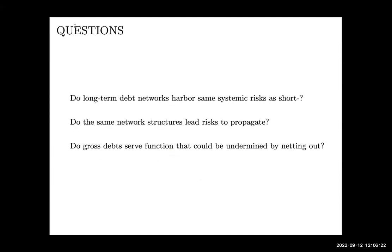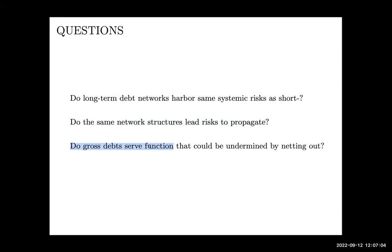We try to address several questions: Do long-term debt networks harbor the same kinds of systemic risks as short-term ones? Is netting out still a good thing to mitigate systemic risk and increase efficiency? Do the same network structures cause risk to propagate — for instance, are tightly connected networks fragile under large shocks, as with short-term debt? And do these gross positions serve some economic function that could be undermined if we tear up contracts and net them out? We should understand that function before making policy prescriptions.